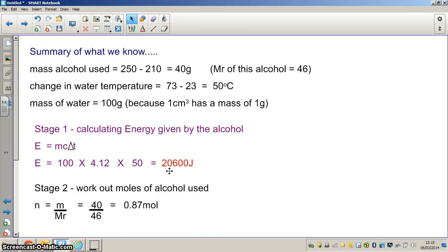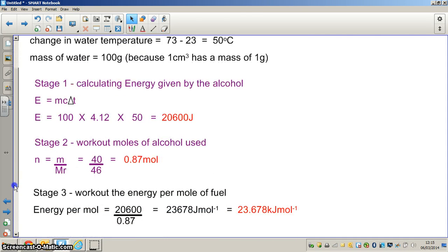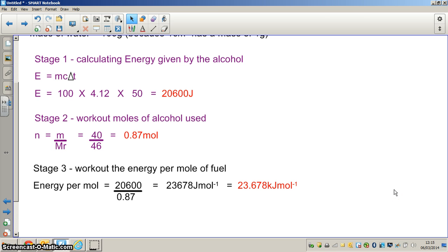Which takes us into the third and final stage, which is to calculate the energy per mole of the fuel or the alcohol. So the energy per mole is simply the amount of energy which has been produced or absorbed by the water, in this case 20,600, divided by the number of moles used, and in this case that's 0.87. So 20,600 divided by 0.87 equals 23,678 joules per mole, which then we usually convert into kilojoules per mole by dividing this number by 1000 to give us a final answer of 23.678 kilojoules per mole. So this alcohol in summary produces 23.68 kilojoules per mole when it is combusted.